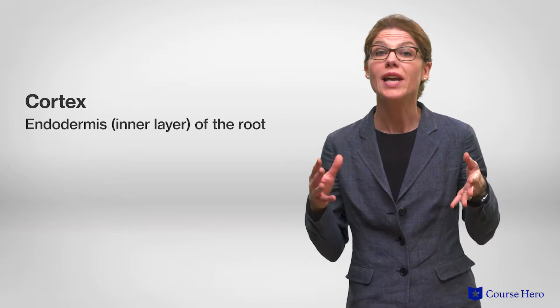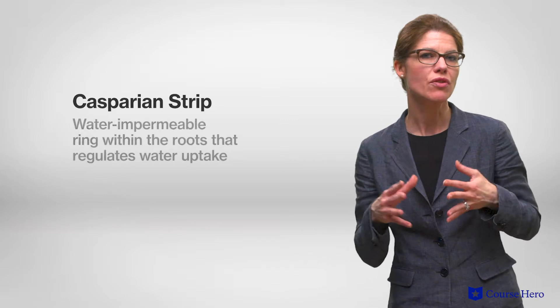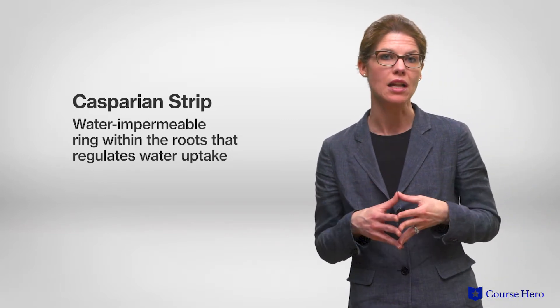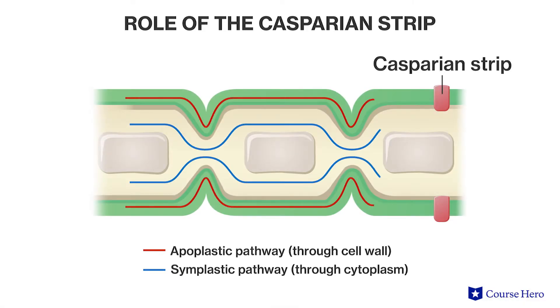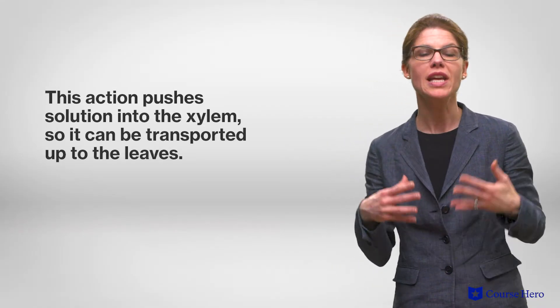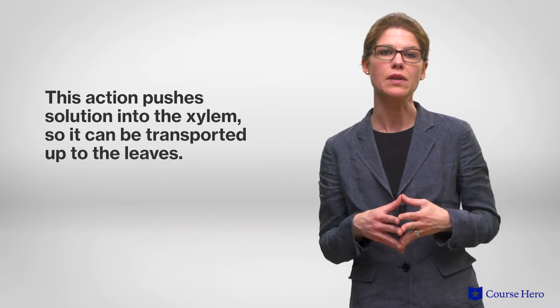After passing through one or both of these pathways, the water and minerals reach the endodermis, or inner layer of the root, called the cortex. A special hydrophobic structure called the Casparian strip surrounds each endodermal cell. Because it is waterproof, the Casparian strip forces the water and minerals into the symplast, so all the water and nutrients are now being channeled through it. This action pushes the solution into the xylem so that it can then be transported up through the xylem toward the leaves. At this point, it is called xylem sap.